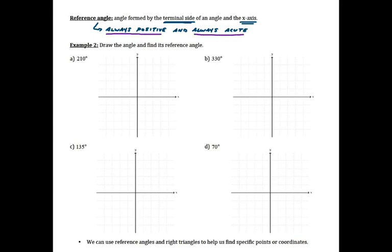For these examples we're going to draw the angle and then identify the reference angle by looking at the measure between the terminal side and the x-axis. For part A, my initial side is on the x-axis and I'm going to rotate to 210 degrees. It should be just past 180 by 30 degrees. So the reference angle is 30 degrees — positive, shown with a counterclockwise arrow, because 210 minus 180 is 30.